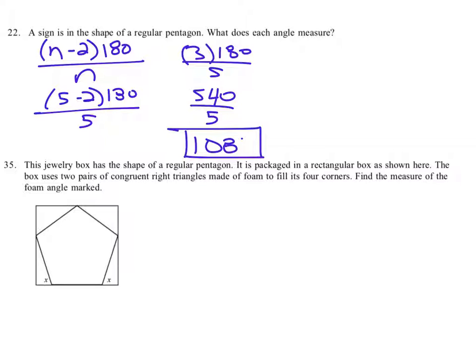That is each angle measure in a regular pentagon. So that's number 22, but that also matters in problem 35 because the jewelry box is in the shape of a regular pentagon. That means every angle is 108 degrees.